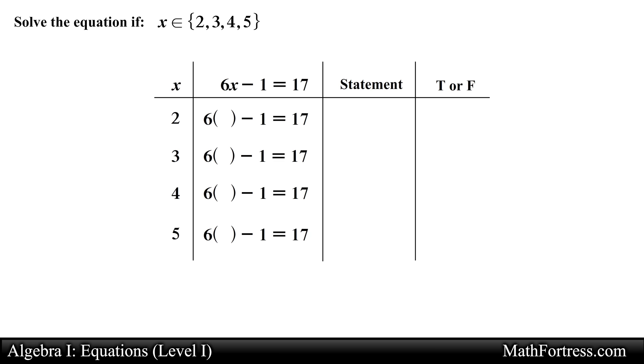Ok, so let's systematically go through each element to find the solution set. The first element in the domain is the number 2. So we substitute that into the equation and evaluate it at that given number. This results in the statement 11 is equal to 17, which is false.